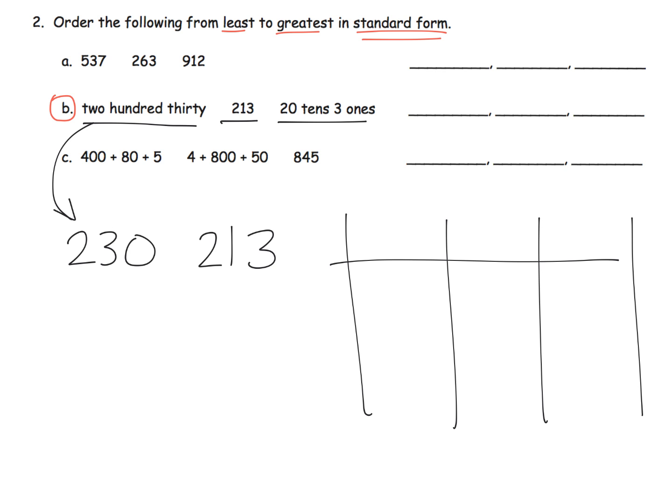So it might be helpful to put it in a place value chart. Here's our ones, here's our tens, and here's our hundreds. Now if we have twenty tens, we know that each group of ten tens can be converted into a hundred. So twenty tens is really the same thing as two hundreds, and then we have three ones left over. So this is really two hundred three.